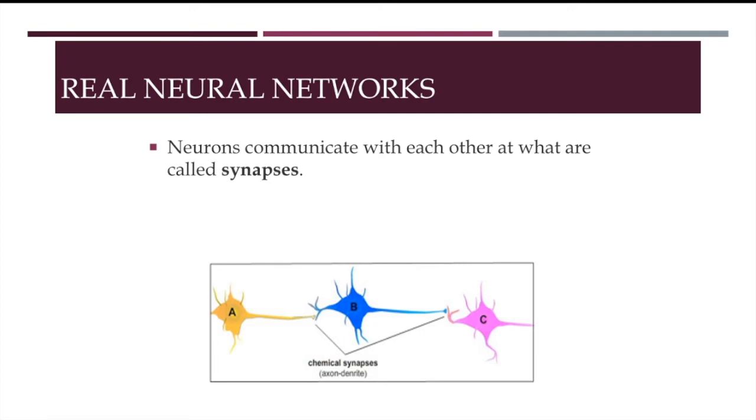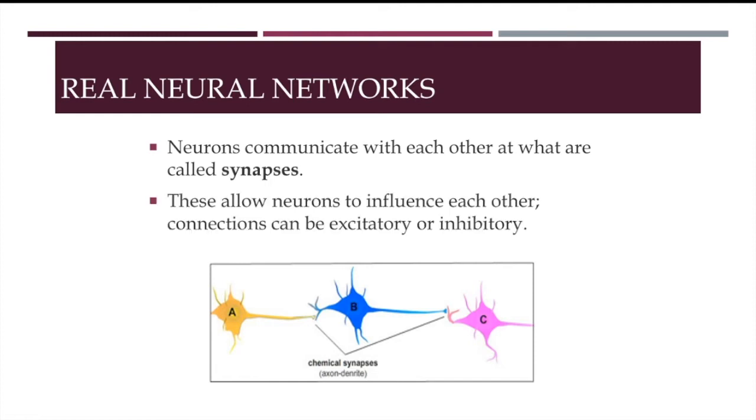Each neuron receives electrochemical inputs from other neurons. If the sum of these electrical inputs is sufficiently powerful to activate the neuron, it transmits an electrochemical signal along the axon. The neuron passes this signal to other neurons. These other neurons may then fire, or may refrain from firing, depending on whether the connections are excitatory or inhibitory. Our entire brain is composed of these interconnected electrochemical-transmitting neurons.